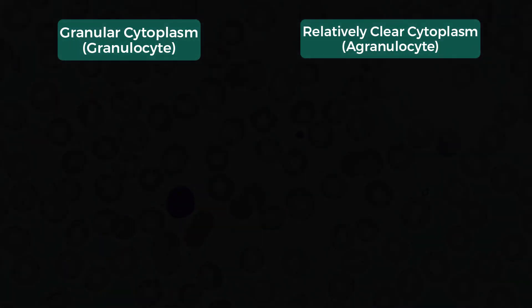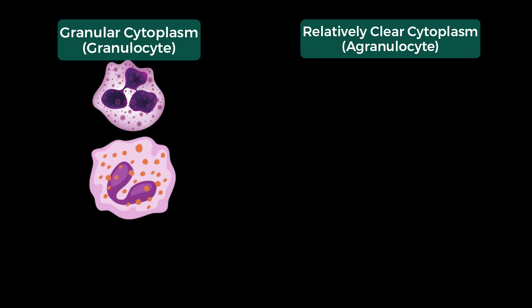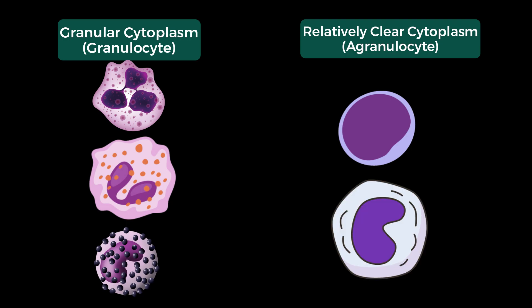If the cytoplasm is granular, then it must be any one of the granulocytes: neutrophil, eosinophil, or basophil. If you find the cytoplasm is relatively clear or agranular, then it must be any one of the agranulocytes — meaning it must be a lymphocyte or monocyte.